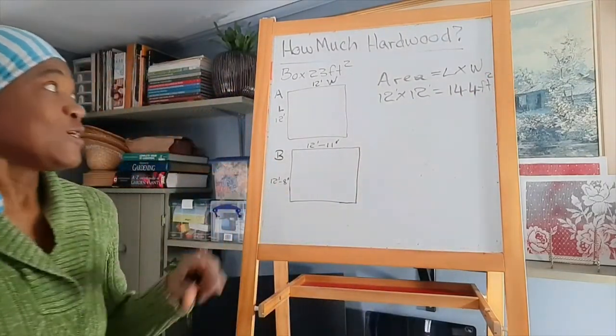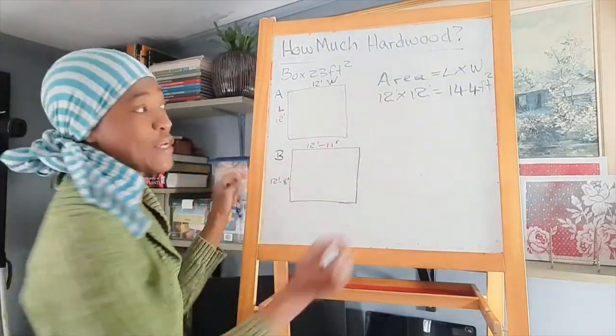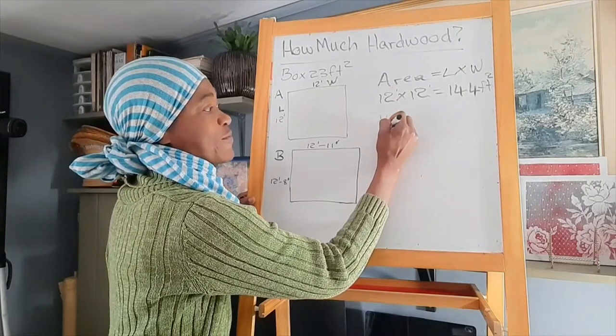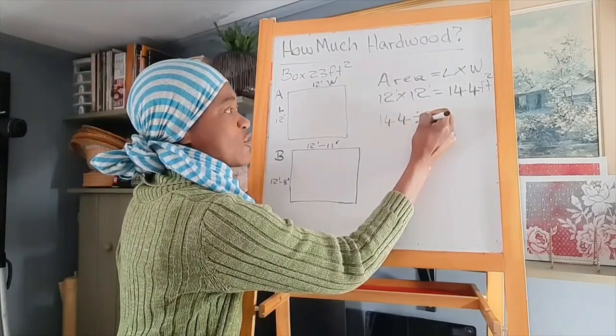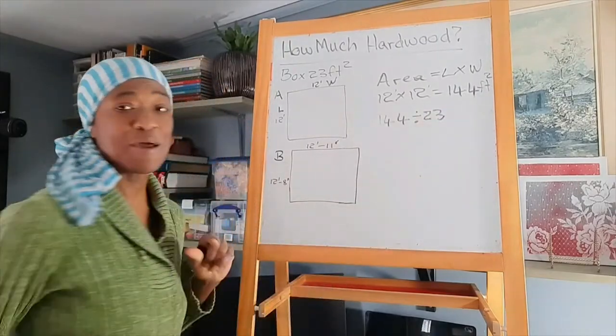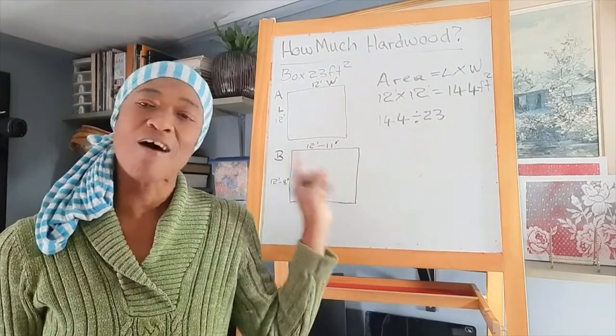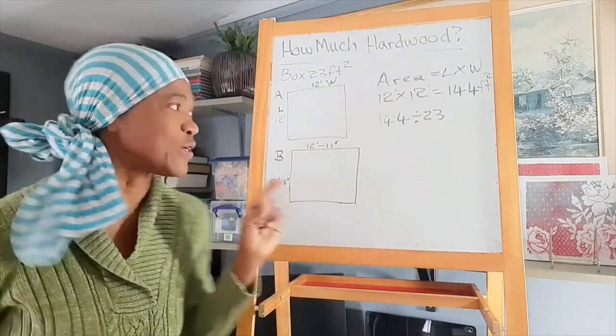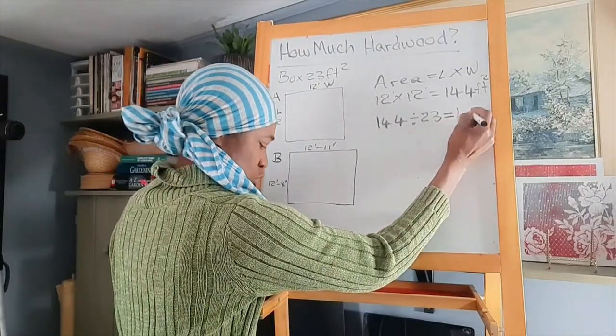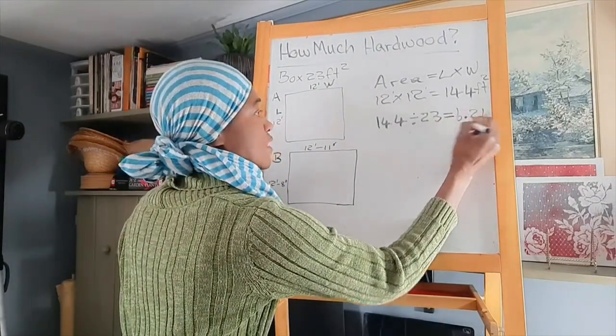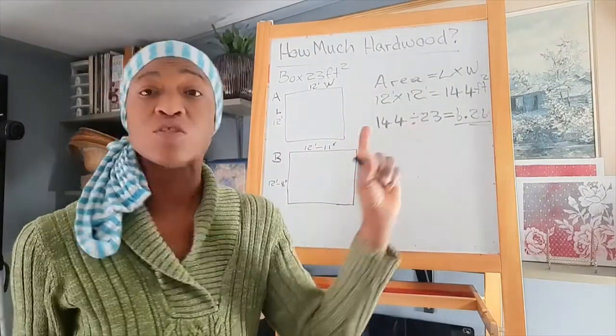Okay. So what do we do next? We take the 144 and we divide it by 23 because there are 23 square feet in a box of laminate or hardwood. And that equals 6.26. That is how many boxes of wood we would need to finish the room.